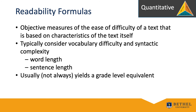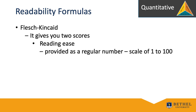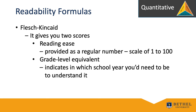Flesch-Kincaid — here's how it works. It gives you two scores. The first is the reading ease, provided as a number on a scale of 1 to 100 — higher is better. A score of around 65 is a good target for most business writing. The second is a grade-level equivalent, which indicates in which school year you'd need to be to understand it.